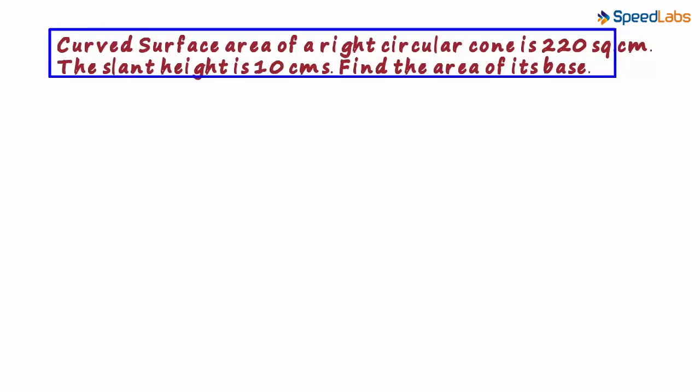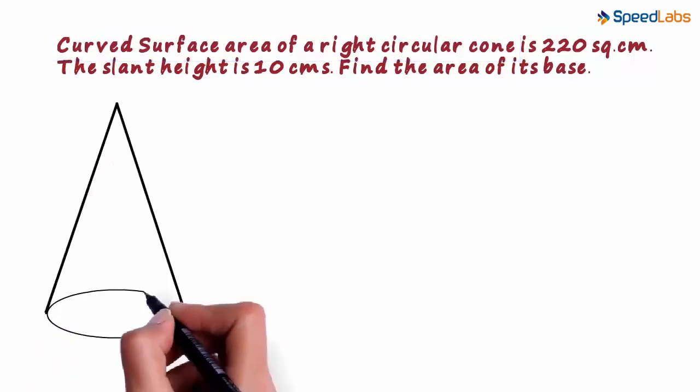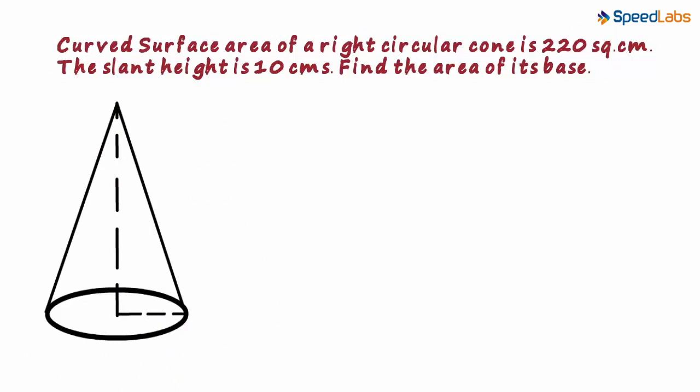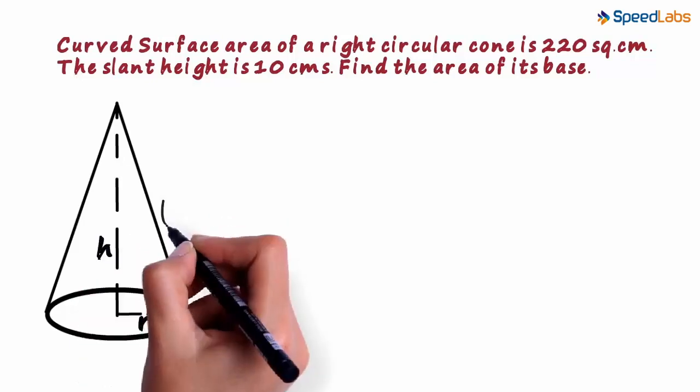We have been given the curved surface area of a right circular cone. Let this be our right circular cone. It is a three-dimensional shape with one curved surface and one circular base. Let the radius of the base be R, perpendicular height be H, and slant height be L.